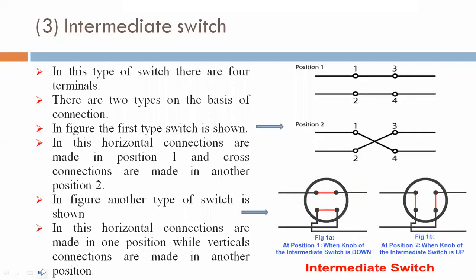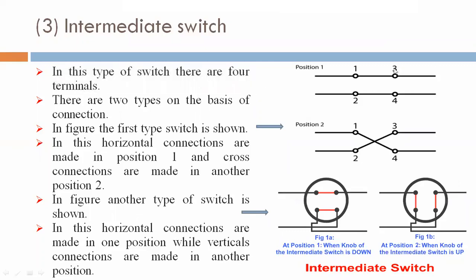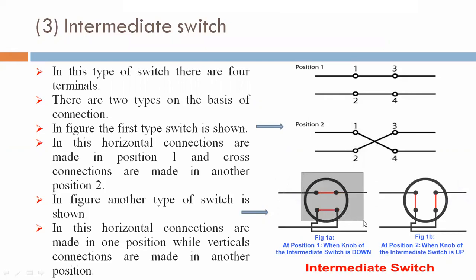Third type: intermediate switch. In this type of switch, there are four terminals — one, two, three, and four — as seen in the figure. The base of the switch also has four terminals: one, two, three, and four.